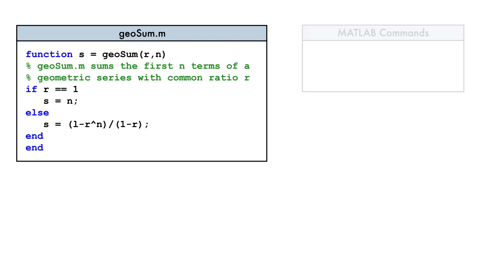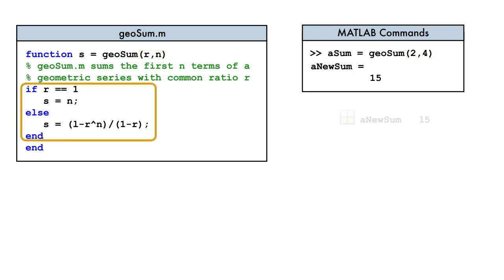Now, when we call GeoSum in the command prompt, the two input values are passed to the function, the function body is executed, and the value of the output variable is returned.